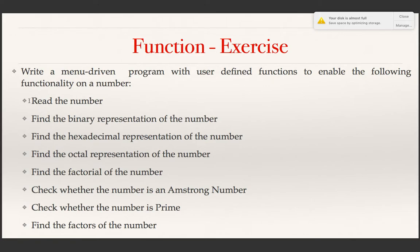For example, option 1 is for reading the number — if the user provides option 1, they should be allowed to read the number, and if option 5 is given, the program should display the factorial of the number. I have received solutions for almost all these functions from many of you and I am looking forward to seeing solutions from others.